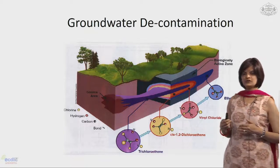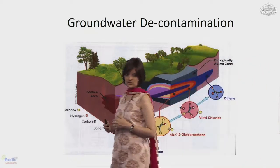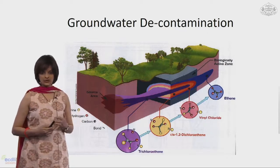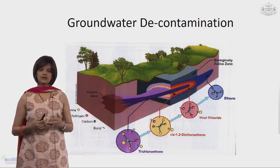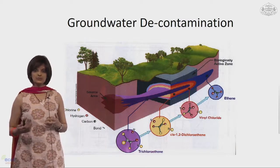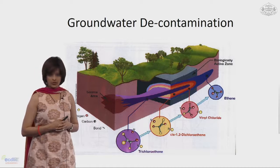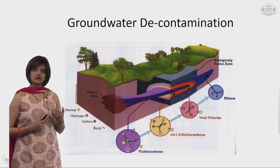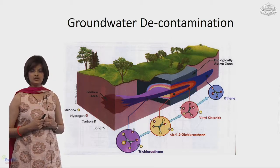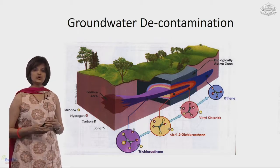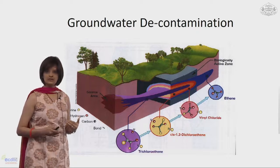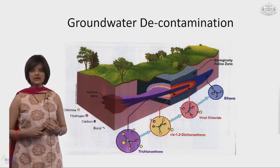That was about different methods used for remediation or treatment of wastewater from different industries — wastewater from piggery industry, and from pulp or textile industry. Now let us talk about groundwater decontamination. Groundwater can get contaminated through spillage of chemicals or leaching of heavy metals and pollutants over a longer period of time, causing underground surfaces or subsurface aquifers to become polluted.